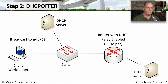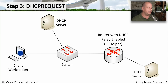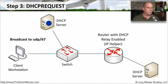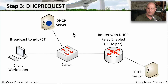The client workstation receives both offers and we proceed to step three: DHCP Request. Now that the client workstation has a list of all possible IP addresses it could have, it picks one and tells the DHCP servers through a broadcast over UDP port 67 which IP address it would like to use. That broadcast goes to all devices, including all DHCP servers, which can now see the request from the client workstation.